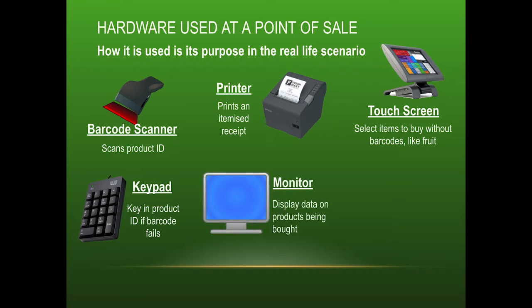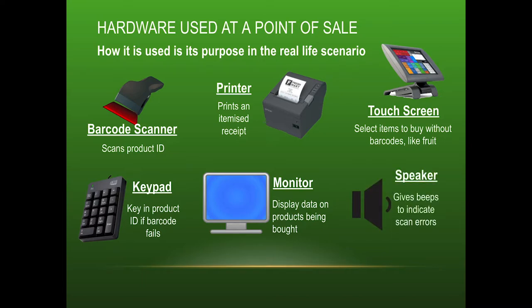The monitor is used to display products being bought. At the checkout point of sale, every time something is scanned you can see it coming up on screen, so you can identify what's being bought in real time. There's also a speaker, which communicates information to the sales representative or employee — when a product scans correctly you get a positive sound, but if it scans incorrectly you get an error sound so you can quickly identify it and re-scan.